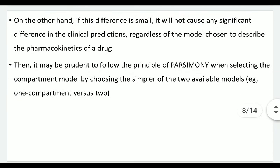On the other hand, if this difference is small, it will not cause any significant difference in clinical predictions regardless of the model chosen to describe the pharmacokinetics of a drug. Then it may be prudent to follow the principle of parsimony when selecting the compartment model — choosing the simpler of the two available models, for example, one-compartment versus two-compartment.